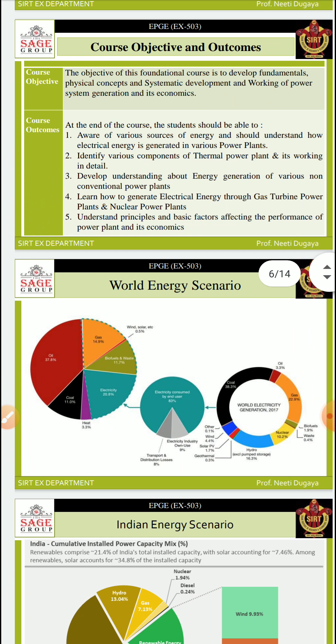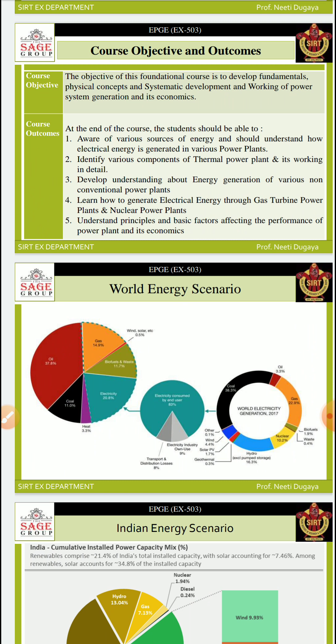Now let's look at the course objectives and outcomes. As you know, we are following NBA — National Board of Accreditation — guidelines, which require course objectives and outcomes for every subject. The course objective for EPGE is to develop fundamental physical concepts and systematic understanding of the development and working of power system generation and its economy.